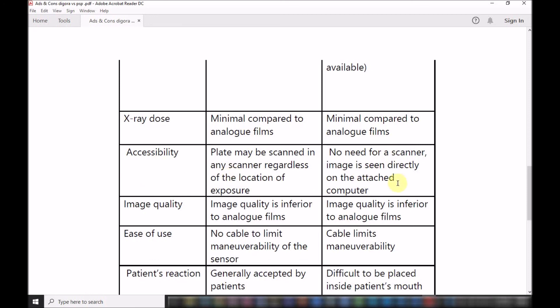Accessibility: plates may be scanned by any scanner regardless of the location of the exposure. As I said earlier, you take the x-ray and then you go back to a scanner which might be remotely placed away from the x-ray machine. With the direct type, you don't need a scanner. The image is directly seen on the attached computer. So when it comes to time management, the direct type is definitely faster because the intermediate step of processing and taking the x-ray and then processing in a scanner is eliminated, and this of course takes time.